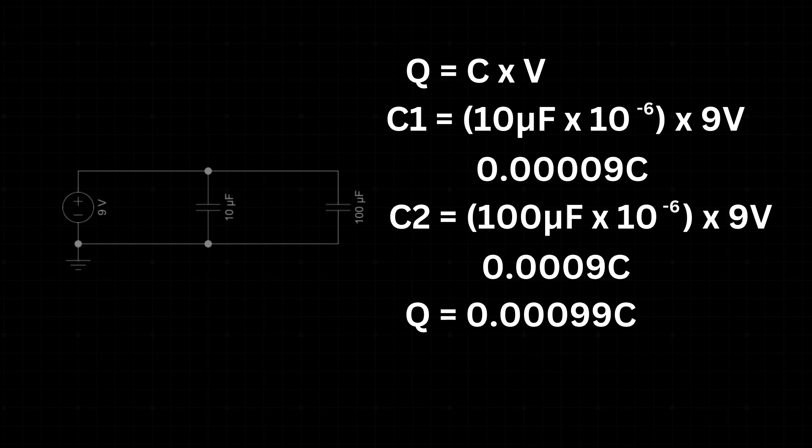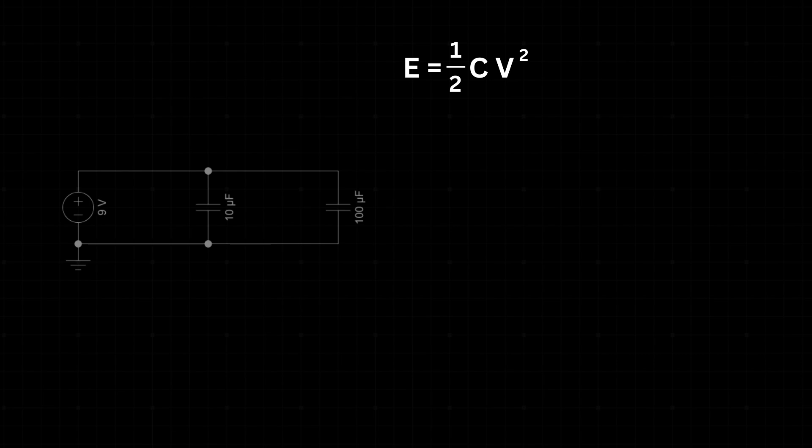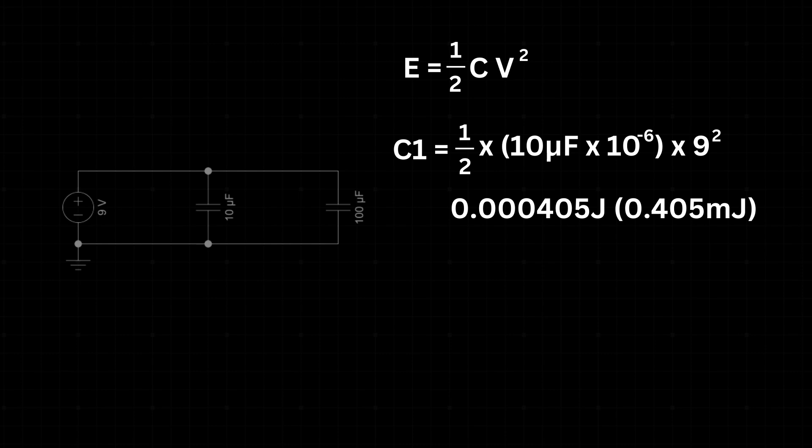Next, let's calculate the energy stored in each of the capacitors. The formula for the energy stored in a capacitor is E equals 1 half times C times V squared, where C is the capacitance of the capacitor in farad and V is the voltage across the capacitor in volts. For C1, it is 1 half times 10 microfarad times 10 to the minus 6 since we need this value to be in farad times 9 to the power of 2. The energy stored in C1 is 0.000405 joules or 0.405 millijoules.